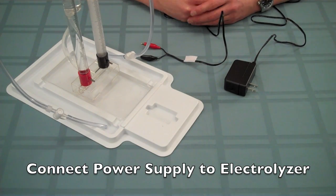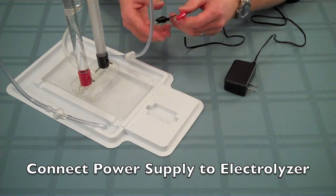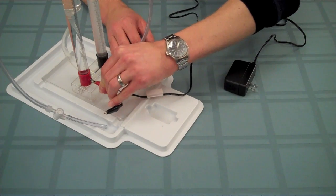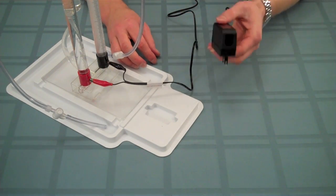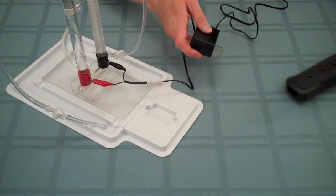Start by connecting the alligator clips of the power supply to the electrolyzer. Connect red to red and black to black. Then, go ahead and plug in the power supply into an electrical outlet.